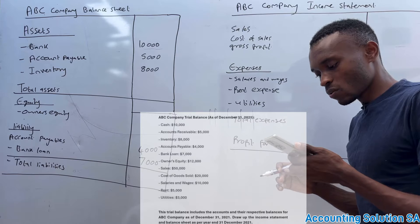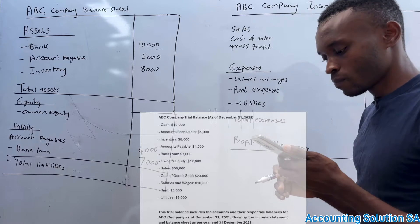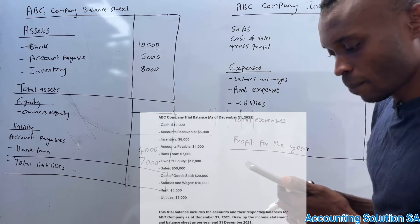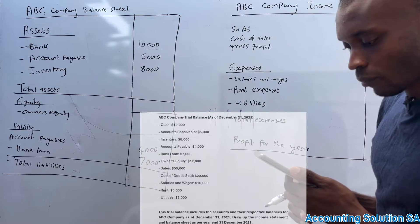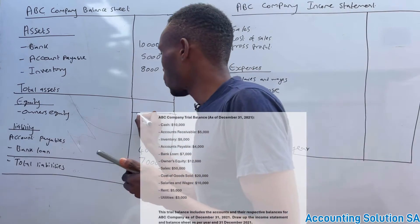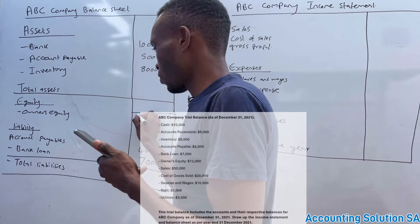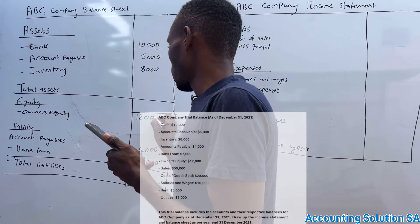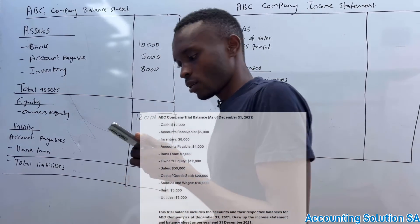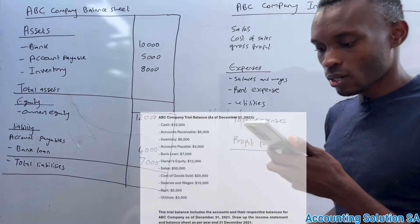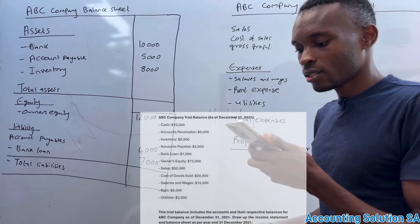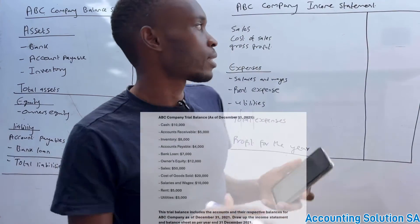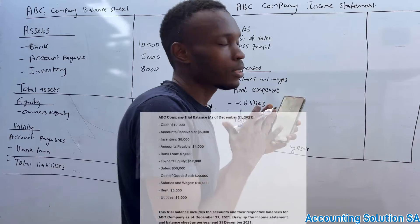Owner's equity is 12,000, and we record that in the equity section.